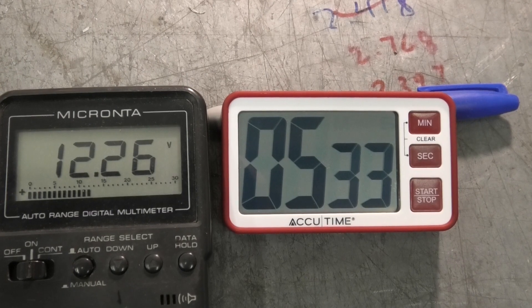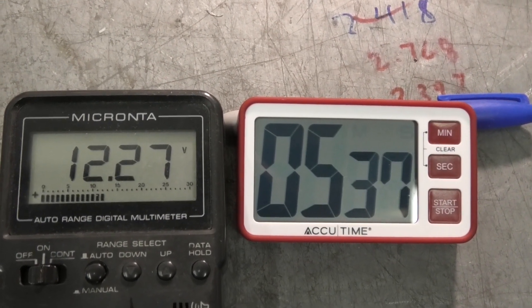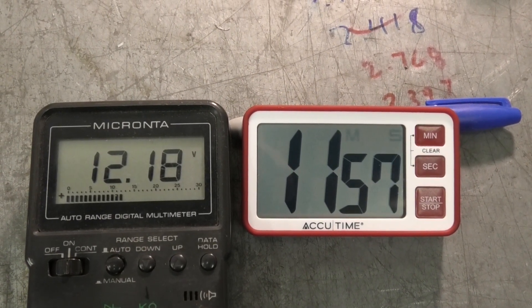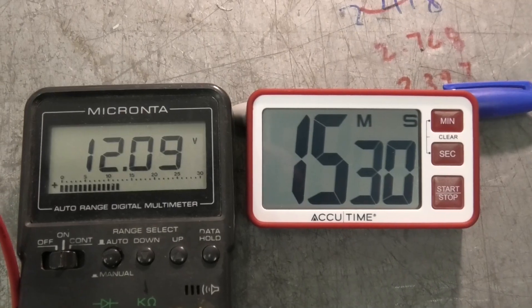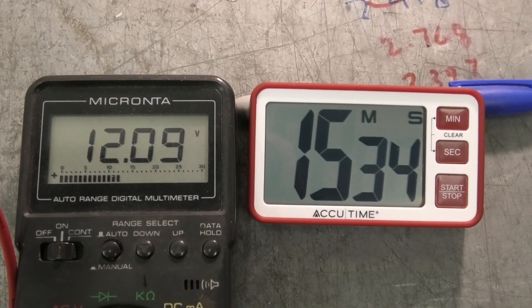Okay, on to the PC680 AGM battery. Starting voltage is 12.89 and at the five minute mark we're down to 12.27. At the 12 minute mark we're down to 12.18 volts and that's unloaded voltage. 15 minutes we're down to 12.09 volts, that's unloaded as well.